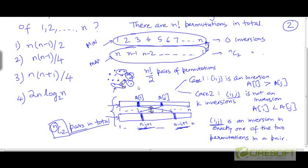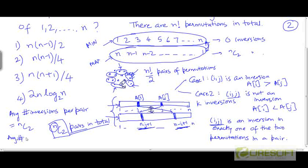This applies to every single pair among the n factorial divided by two pairs that we have. So the average number of inversions per pair is nC2, since every pair has nC2 inversions total. From this, we can conclude that the average number of inversions per permutation is going to be half of nC2, which is n times (n−1) divided by 4.